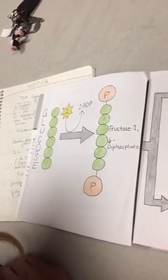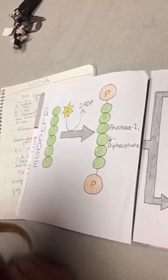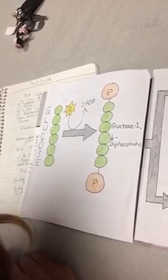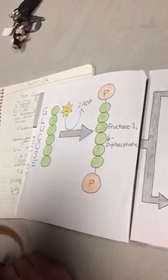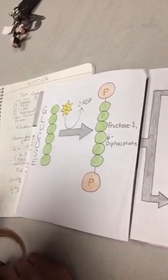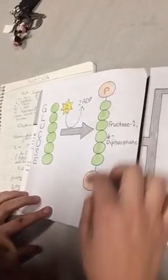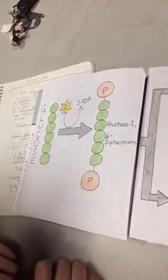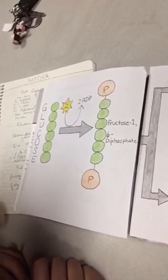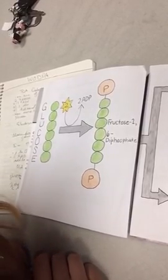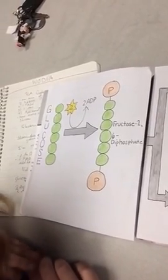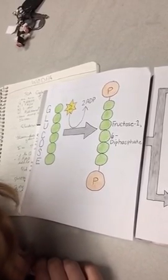The first step in glycolysis happens when an enzyme called hexokinase acts on the glucose molecule to add two phosphorus molecules to the very ends, as seen here. The result is a six-carbon sugar molecule, now called fructose. It is important to notice that phosphate have been added to the molecular equation.